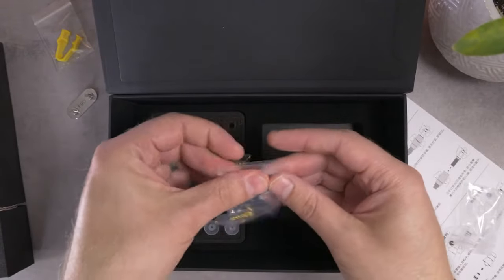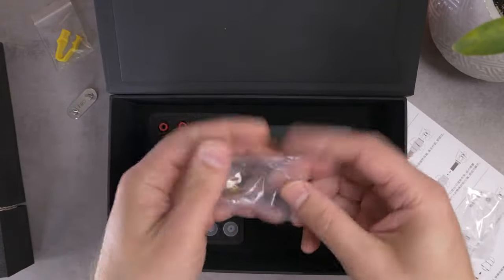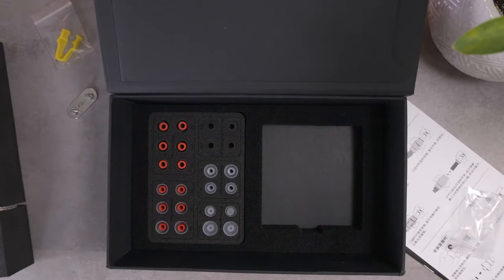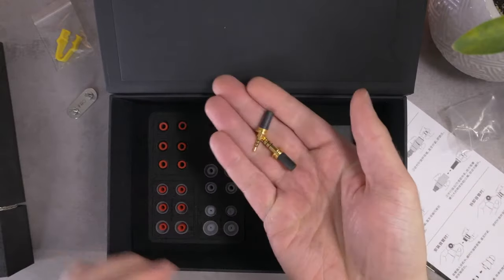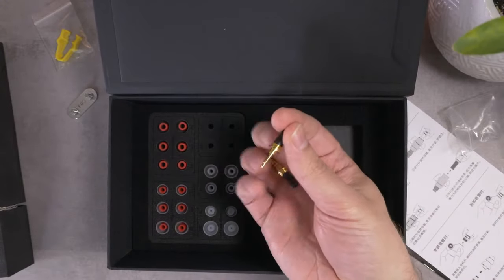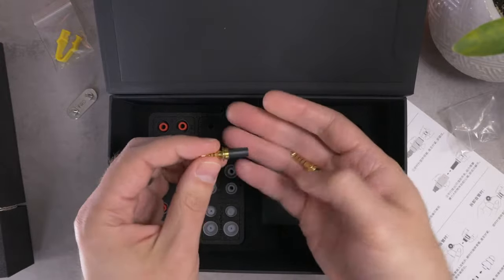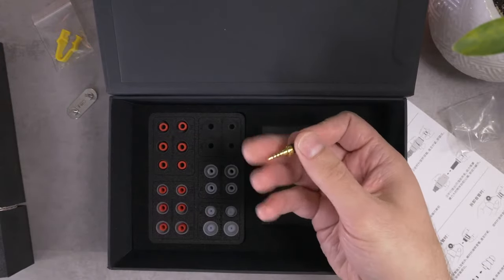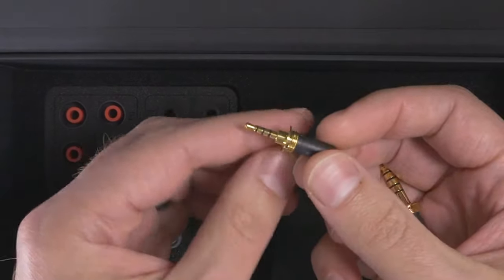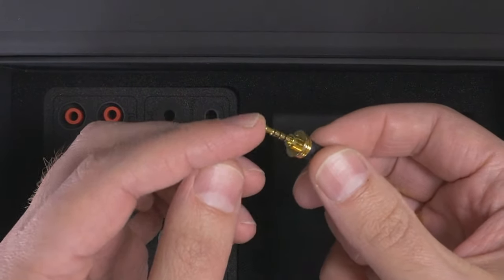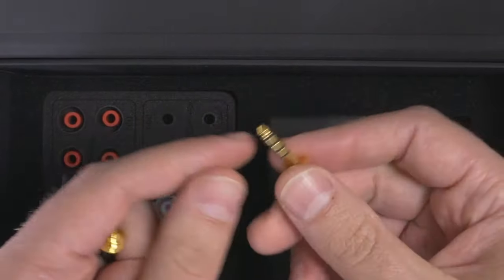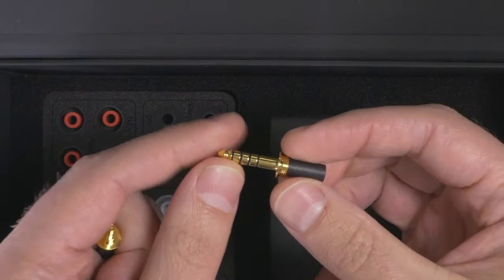Put those aside for now. And they do also include, oh, interesting. So I'm going to guess that this cable, kind of like Dunu's cables, will be able to be cross compatible and connect two different connection types. So what we've got here is a balanced 2.5 millimeter connector. And then here we've got a balanced 4.4 millimeter connector.